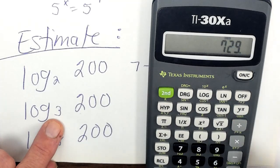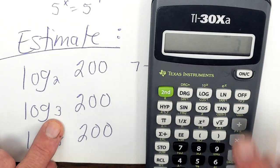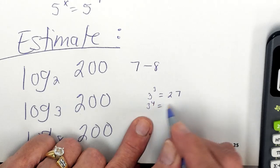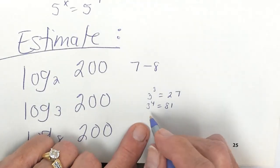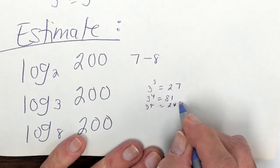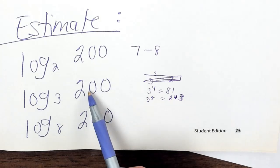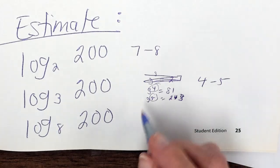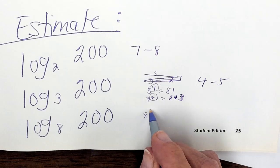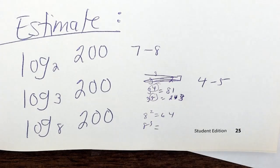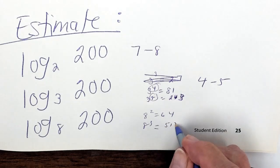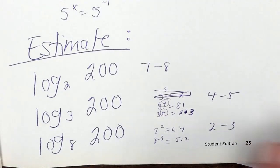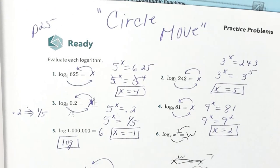3 to the 3rd is 27, 3 to the 4th is 81, and 3 to the 5th is 243, so that answer is between 4 and 5. For log base 8 of 200: 8 squared is 64 and 8 cubed is 512, so the answer is between 2 and 3. We're going to have a quiz tomorrow just over some estimation problems and being able to do the circle move.